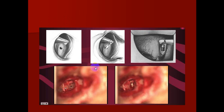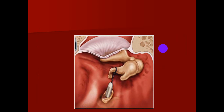In the stapedotomy procedure, we remove the stapes superstructure and leave only the footplate of the stapes. We make a hole or fenestration in the center of the footplate, then place a piston or prosthesis into the fenestration, secured to the long process of the incus. This connects the long process of the incus to the footplate of the stapes.